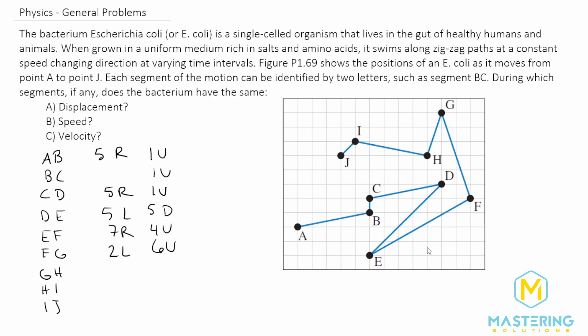All right so now for GH we have one to the left and three down. And then HI we go five to the left and that one just goes one up. And then IJ is one to the left and one down.